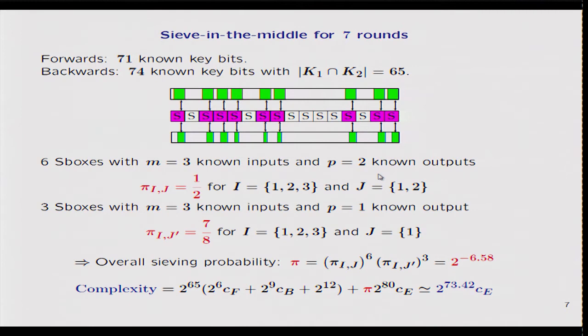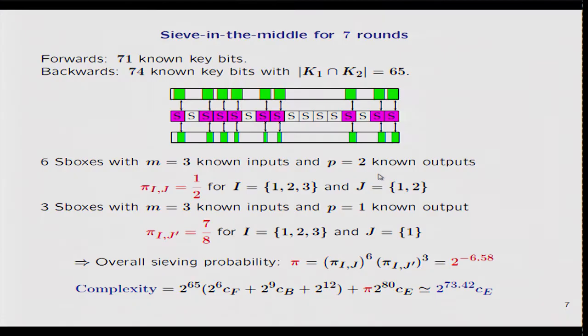For six S-boxes, we know the first three input bits and the first two output bits. These five bits together provide a sieve with sieving probability one-half. We also have three additional S-boxes for which the same three input bits are known, but now only one output bit is known. Even though the number of known bits equals four — the size of the S-box — this provides a sieve with sieving probability seven-eighths. Altogether, we get a total sieving probability of 2^(-6.5), meaning we have reduced the size of the key space by about six bits.